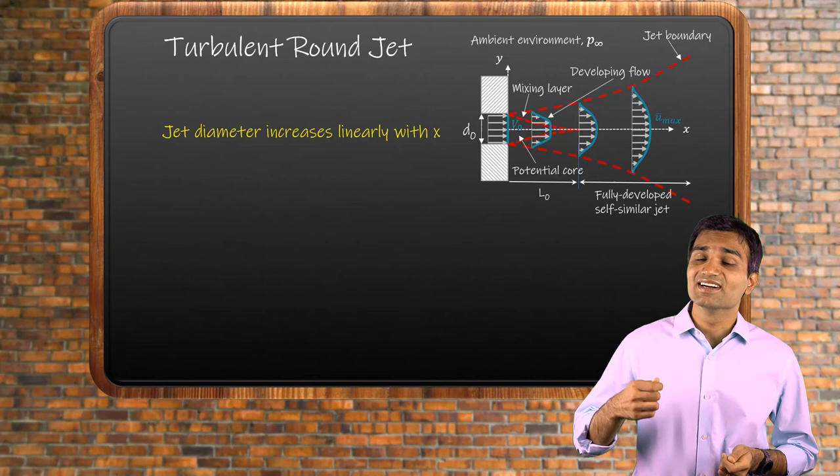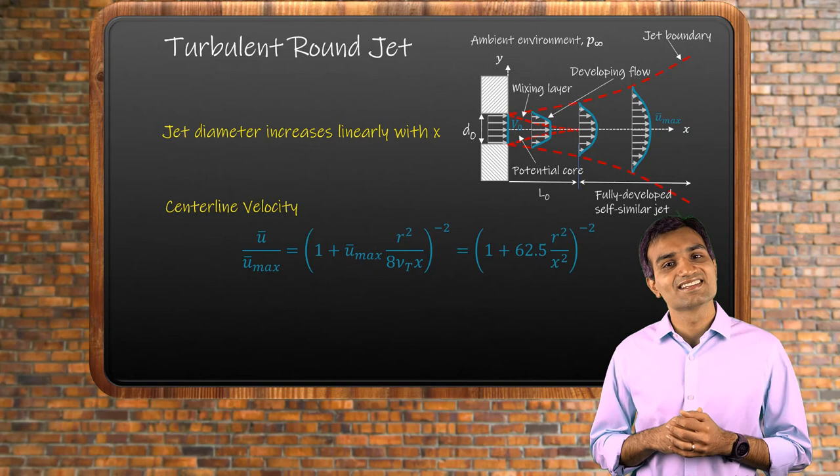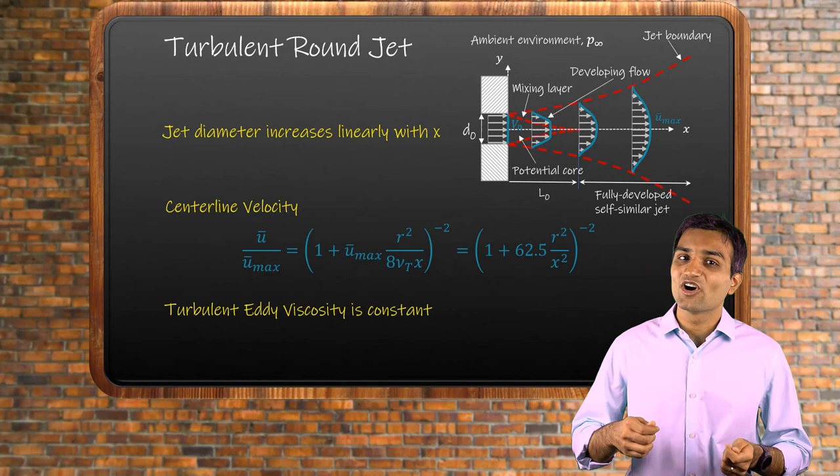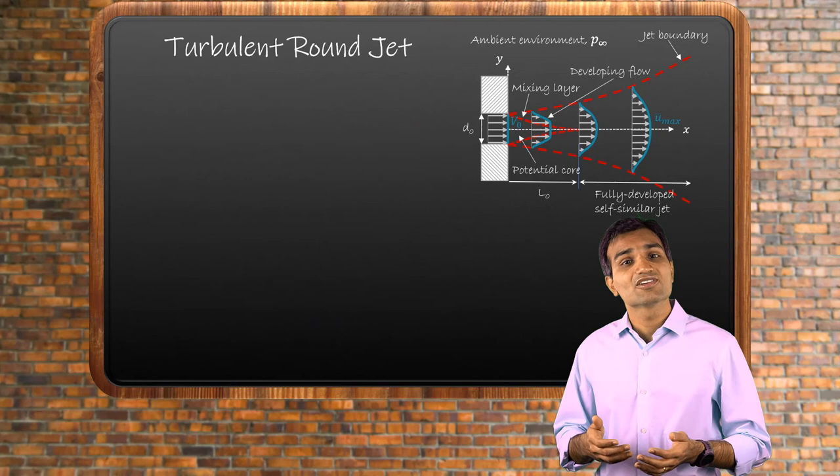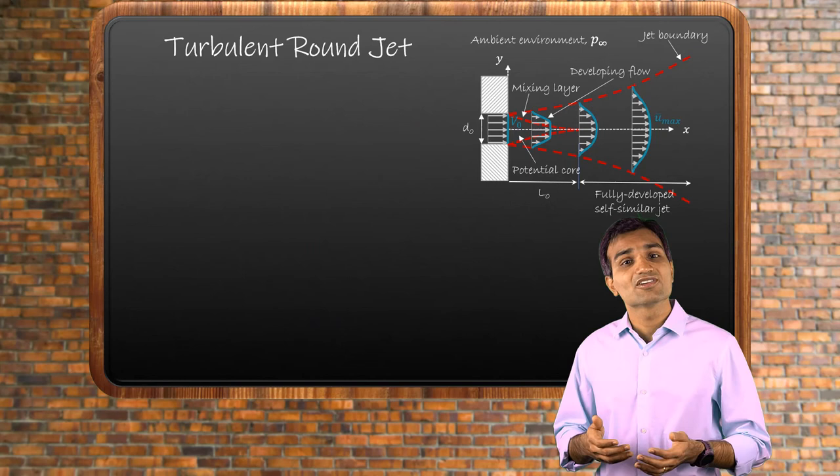As jet diameter increases linearly along x, the centerline velocity decreases. The eddy viscosity for a round turbulent jet is a constant and is obtained using experimental curve fitting. Based on experiments, the following jet velocity correlation was obtained. The self-similar velocity profiles at various axial locations are plotted as a function of y.